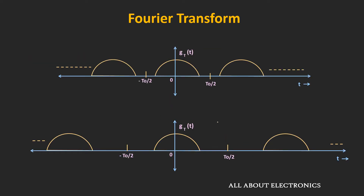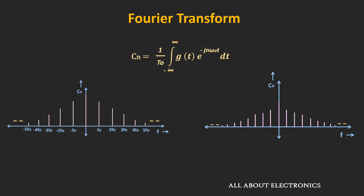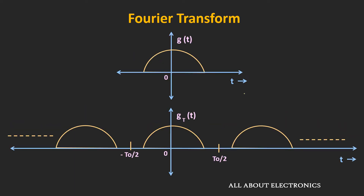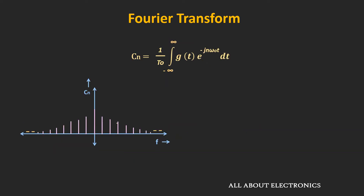Now if we double the time period of the signal — that is, T0' equals 2·T0 — then the frequency gets halved. Since the time period has been doubled, the amplitude or weightage of each coefficient also reduces. As we increase the time period, the spectral components get closer and closer — in other words, the frequency spectrum becomes denser. And as T0 tends to infinity, meaning the signal repeats after an infinite time period, then g(t) equals g(t) exactly, and the spectral components are no longer discrete — we get a continuous frequency spectrum.